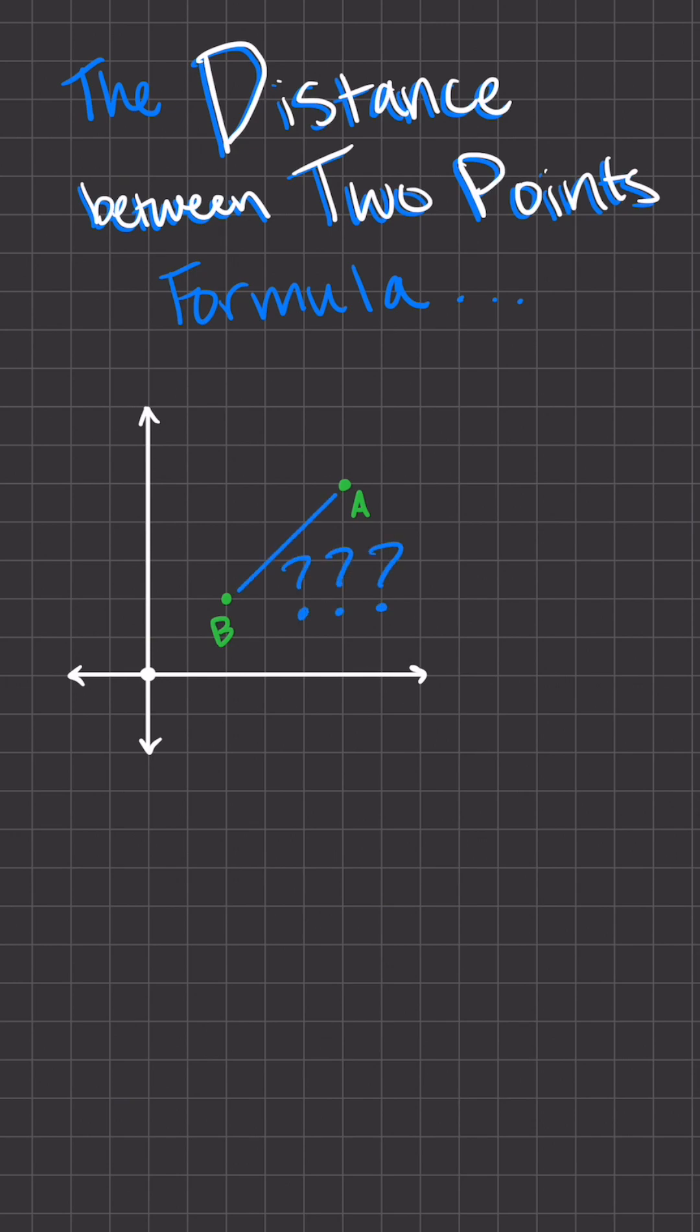This is where the distance between two points formula comes into play. The square root of x2 minus x1 squared, plus y2 minus y1 squared.